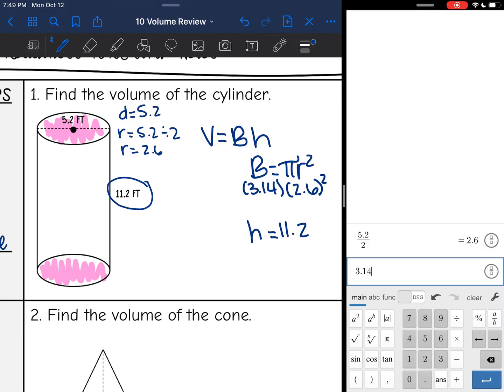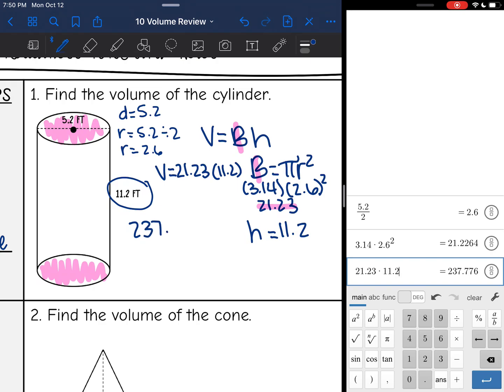And 3.14 times 2.6 squared is 21.23. So I have everything I need. I have the base, it is 21.23, and I have the height, it's 11.2. I just multiply those together to find the volume. So 21.23 times 11.2 is 237.78 feet cubed.